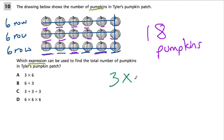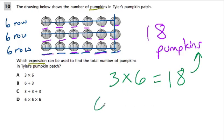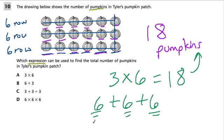I would write that as multiplication. 3 times 6 means, first of all, it means 18, which is the answer we need. And it also means you have 6 plus 6 plus 6, or 3 groups of 6 pumpkins. So out of all of these, I would pick A: 3 times 6.